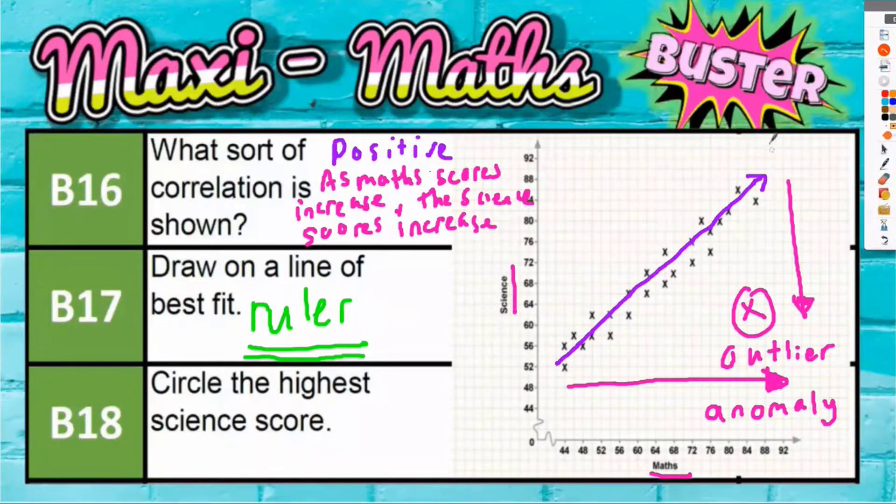And then B18, circle the highest score, the highest science score I should say. Well, the highest science score is the one that is furthest up the science scale, and this score here is the one that's the highest vertically. So that one would be the highest science score with a green circle.